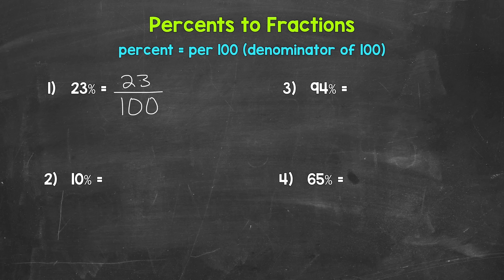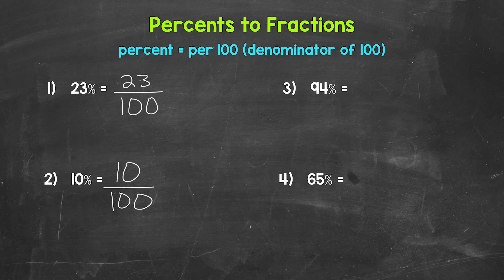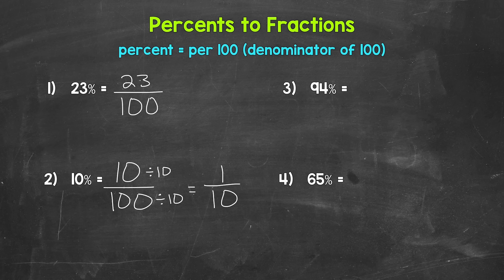Let's move on to number two, where we have 10 percent. Drop the percent symbol and put this over 100: 10 over 100, ten hundredths. But we can simplify — we have a greatest common factor of 10. 10 divided by 10 gives us 1, and 100 divided by 10 gives us 10. So we get 1 over 10, one tenth. The only common factor between 1 and 10 is 1, so this is in simplest form. 10 percent equals 1 over 10.